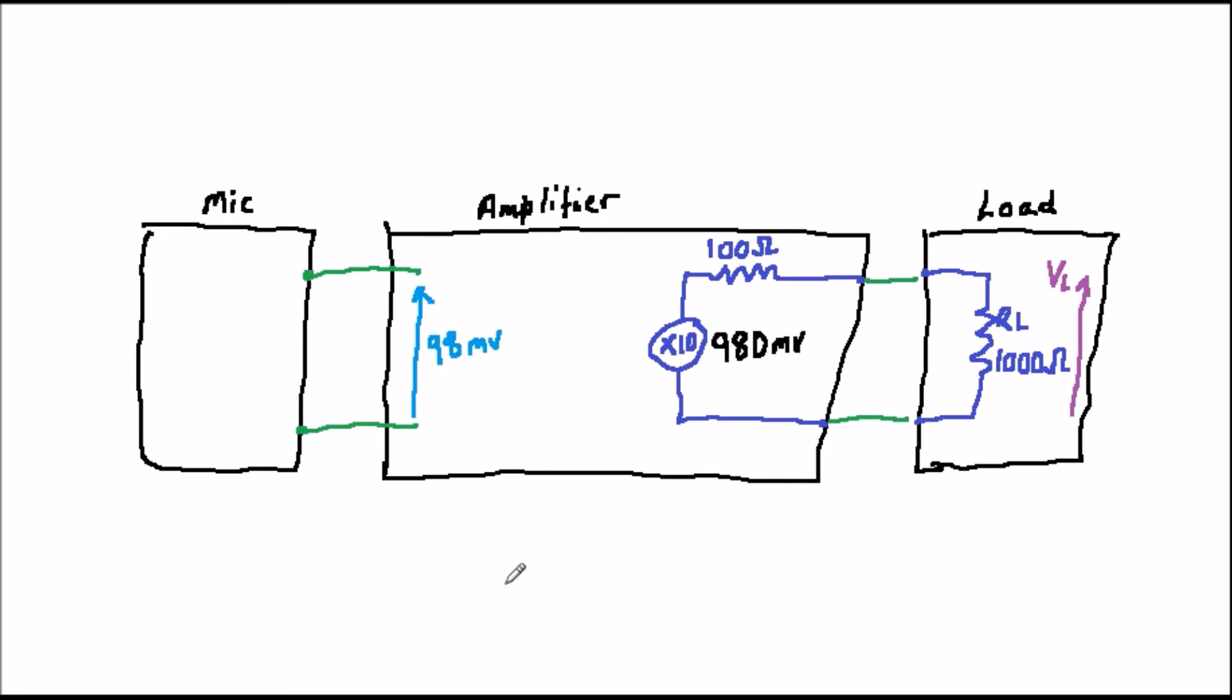It's not actually getting out of the microphone and into the amplifier. Suppose now that our amplifier has a gain of 10 and an output resistance of 100 ohms, but it is feeding into a second circuit which has an input impedance or resistance of 1000 ohms.